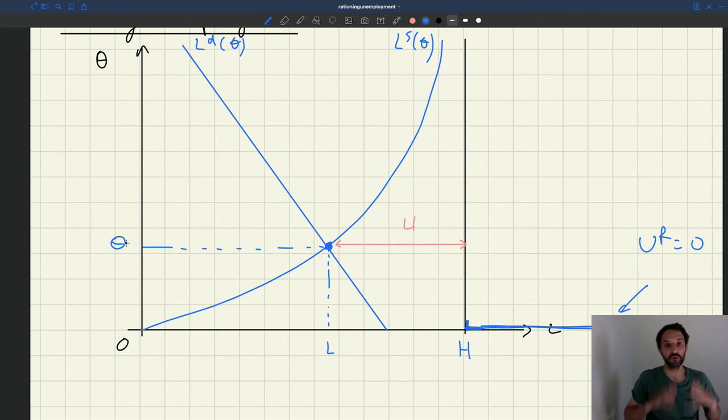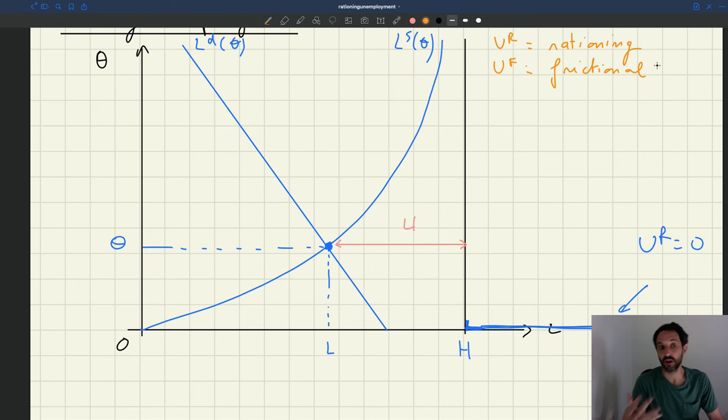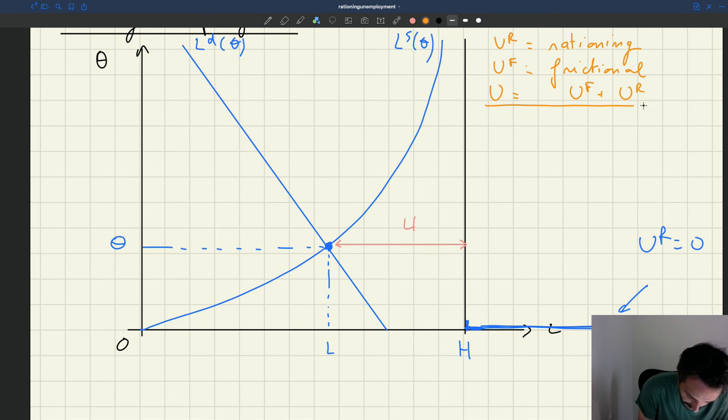So how do we decompose total unemployment between frictional unemployment and rationing unemployment? So let's call UR is rationing unemployment, which is a lack of job in the economy, and UF is frictional unemployment, which is extra unemployment besides the lack of job in the economy that's caused by the matching friction. And of course, we want that U is equal to UF plus UR. So we want a decomposition like this.